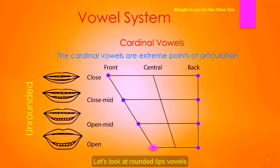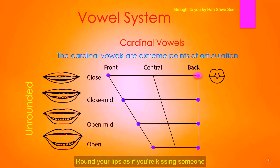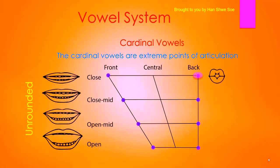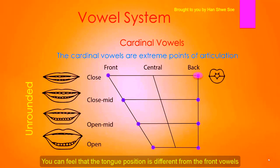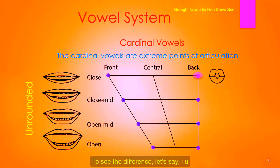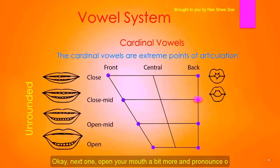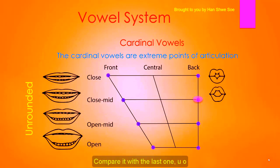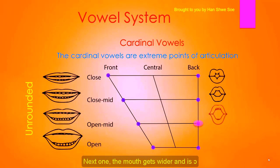Let's look at rounded lip vowels. Round your lips as if you're kissing someone and try to pronounce 'ee.' You can feel that the tongue position is different from the front vowels. The next one — open your mouth a bit more and pronounce 'ee.' After that, the mouth gets wider and is 'ee.'